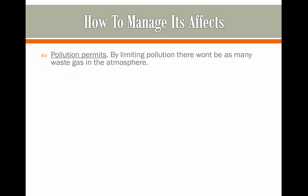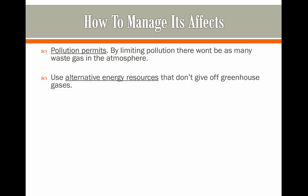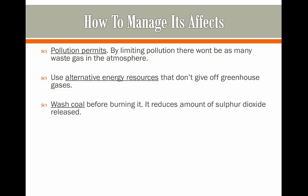So how do we manage its effects? We can set pollution permits — these are limits given to firms which won't allow them to pollute as much, and therefore release as much waste gas into the atmosphere. We can use alternative energy resources that aren't going to give off greenhouse gases. Also, we can wash coal before we actually burn it. This will reduce the amount of sulfur dioxide released into the atmosphere, which will therefore potentially not trap as much heat and therefore slow climate change.